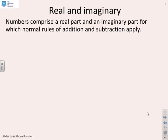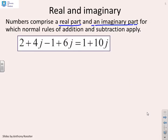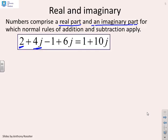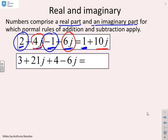Most complex numbers comprise a real part and an imaginary part, and again the normal rules of addition and subtraction apply. For example, (2 + 4j) plus (−1 + 6j): add the real parts, 2 plus −1 gives 1, then add the imaginary parts, 4j plus 6j gives 10j, so the result is 1 + 10j. In another example, (3 + 21j) plus (4 − 6j) gives 7 + 15j.